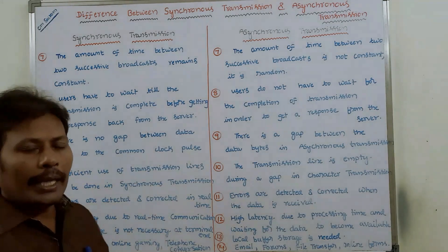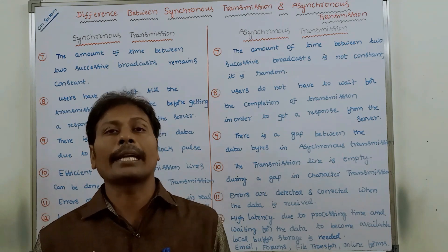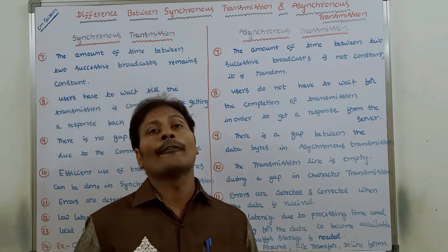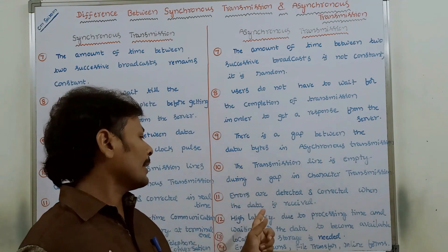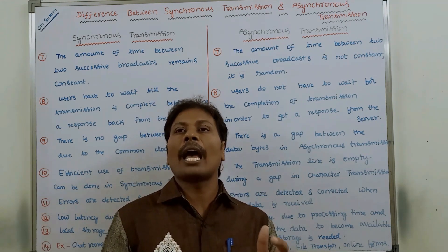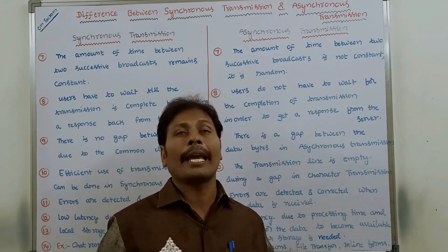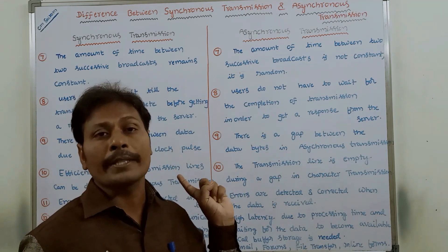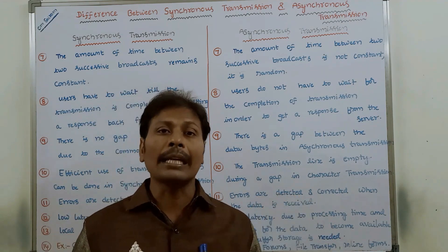Next: in synchronous transmission, errors are detected and corrected in real time. Whereas in the case of asynchronous transmission, errors are detected and corrected when the data is available at the receiver. In synchronous transmission, errors are detected and corrected in real time only.